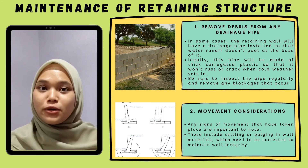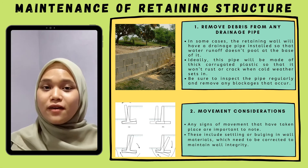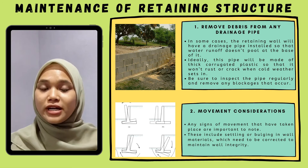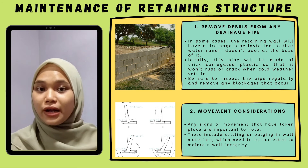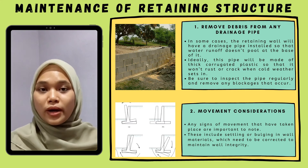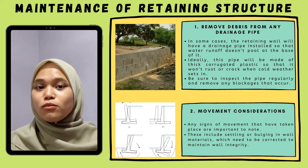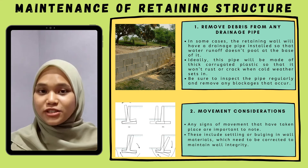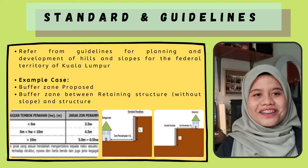The next part is about the maintenance of retaining structures. First, remove any debris from the drainage pipe by checking the pipe regularly. Second, movement consideration — if there are any signs of movement like settling or bulging, it needs to be corrected quickly.